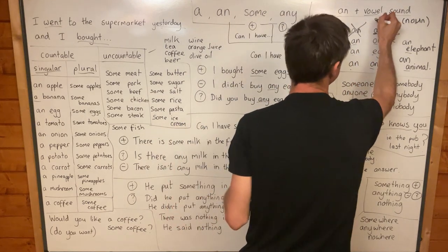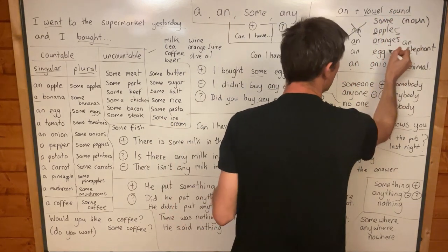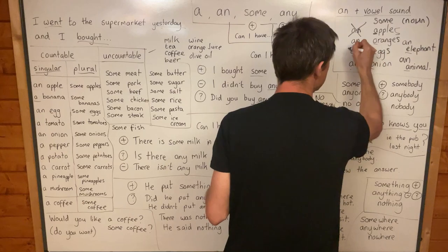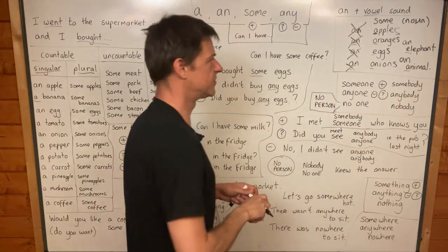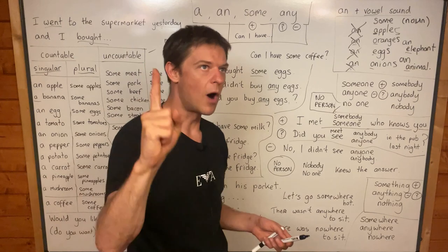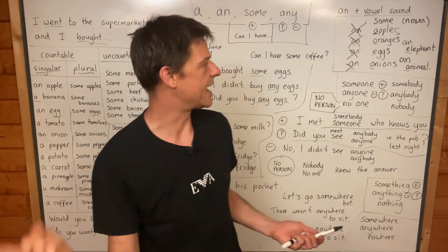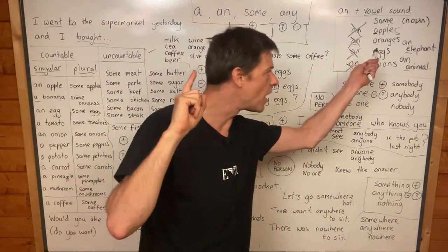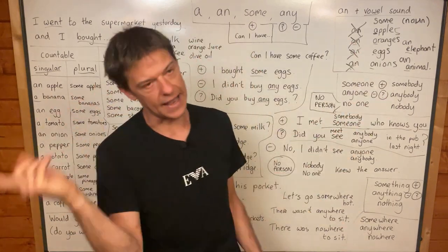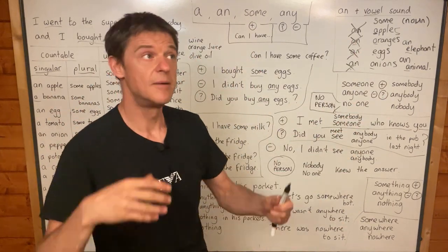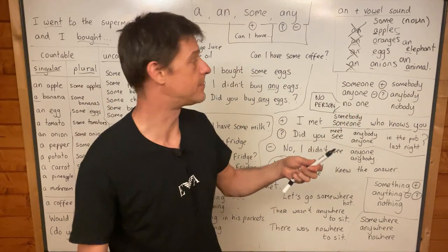Some apples, some oranges, some eggs, some onions. So: one onion / an onion; one egg / an egg; one orange / an orange; one apple / an apple. But many apples / some apples; many oranges / some oranges.